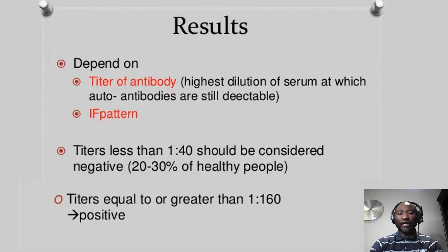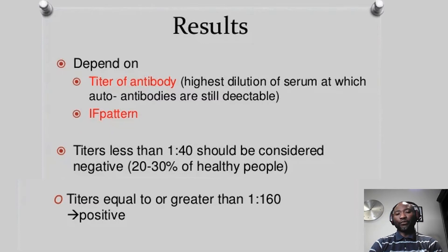The results of an ANA are reported as a titer — not a ratio. Although it's written as a mathematical ratio, it's actually a titer. A titer is the highest dilution of serum at which the autoantibodies are still detectable. You keep diluting until the autoantibodies are no longer detectable, and the last reading at which you could detect them before they became undetectable is the titer being reported. For example, a titer can be recorded as one in 40, meaning you had about 40 dilutions before you could no longer detect the autoantibodies.